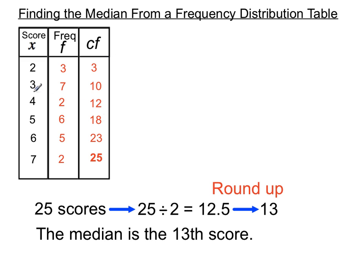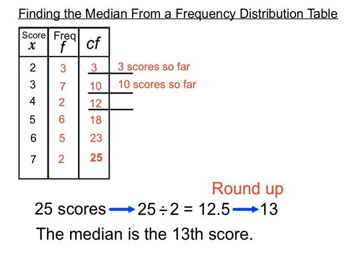We'll use the cumulative frequency column to figure out which original score must have been the 13th if we wrote them all out in order. The first cumulative total is three — so the first three scores are twos. The next cumulative total of ten tells us that after adding the twos and threes, there are ten scores so far. After the third row, adding twos, threes, and fours, there are 12 scores so far.